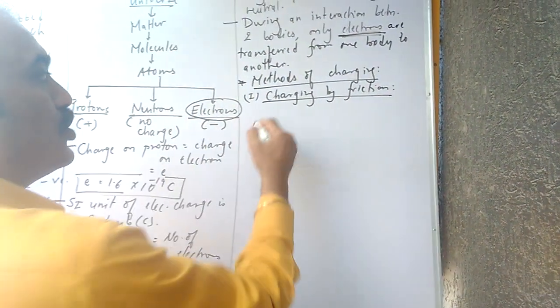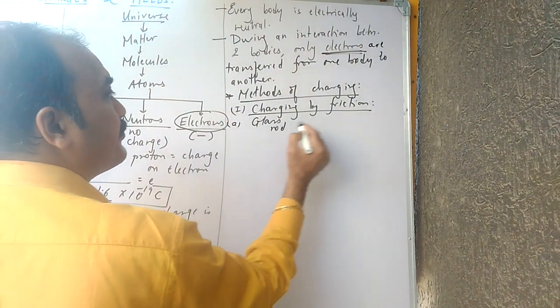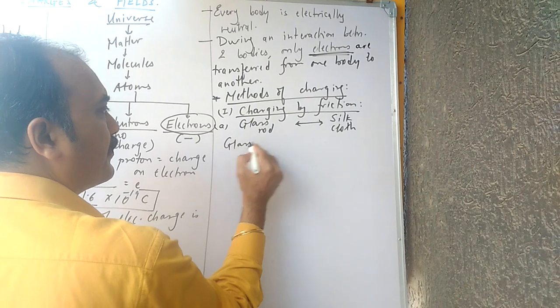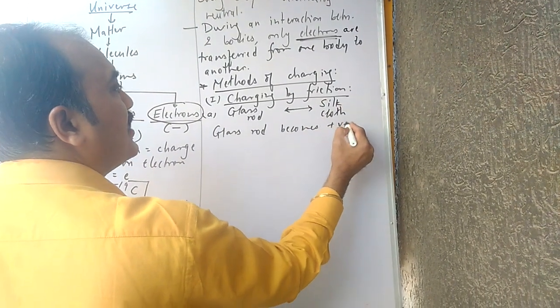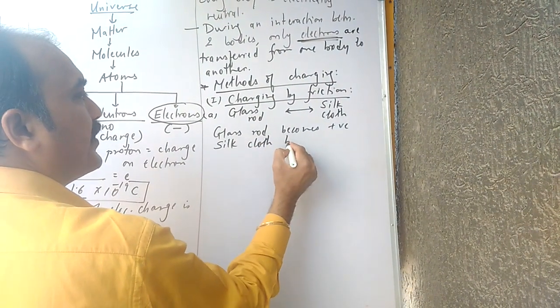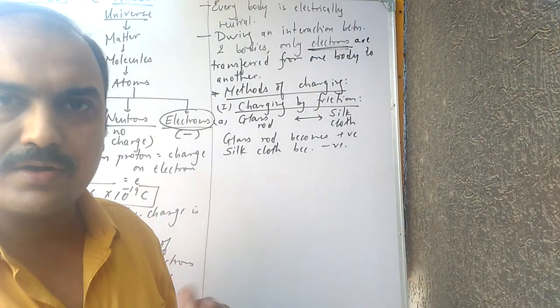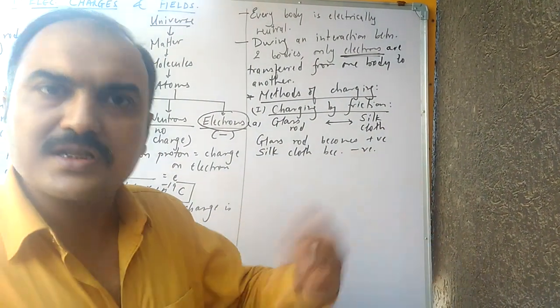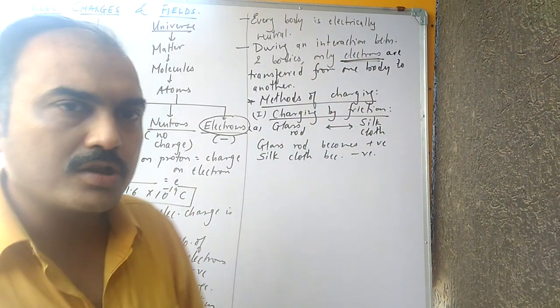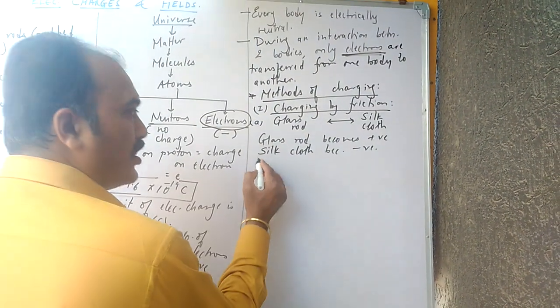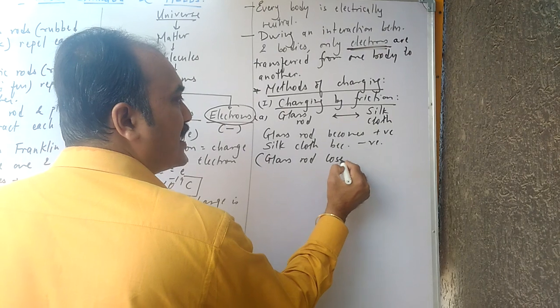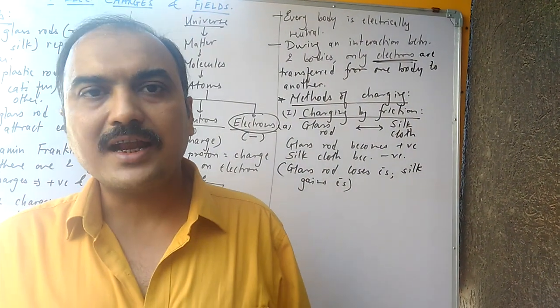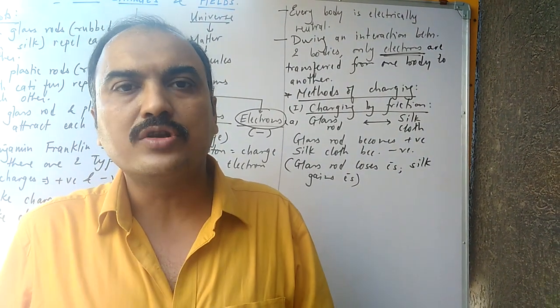So if I rub an uncharged glass rod with an uncharged silk cloth, we saw that glass rod becomes positively charged, whereas silk cloth becomes negatively charged. So what happened here? What went from one body to another? Understand this: glass rod loses electrons and becomes positive, whereas silk cloth gains electrons and becomes negative. So glass rod loses electrons, whereas silk cloth gains electrons. A body which loses electrons will become positive, whereas a body which gains electrons becomes negative.